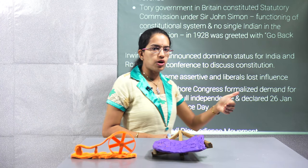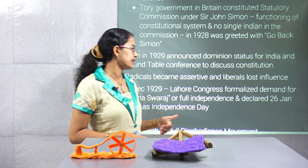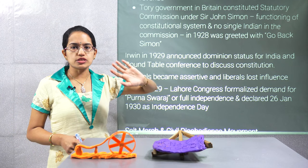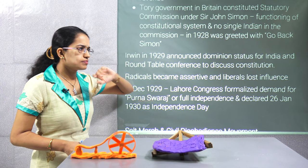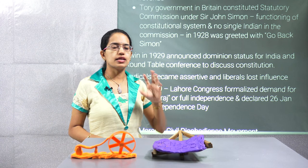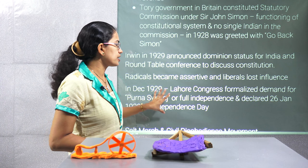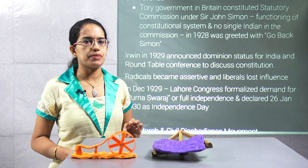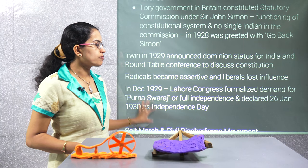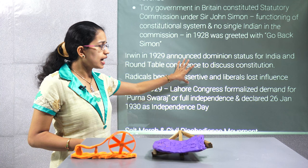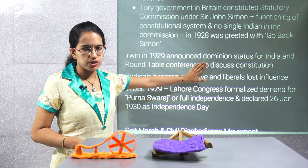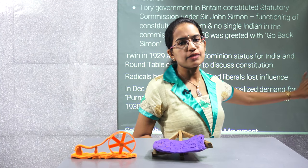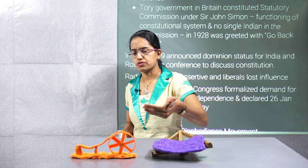The first round table conference was rejected by Congress. The radicals were assertive but liberals lost their influence. Jawaharlal Nehru in the Lahore session — the Lahore Congress — talked about the demand for Poorna Swaraj, or complete independence for India. Gandhiji initially was not in favour of this. But later on he signed the Gandhi-Irwin Pact and attended the second round table conference.